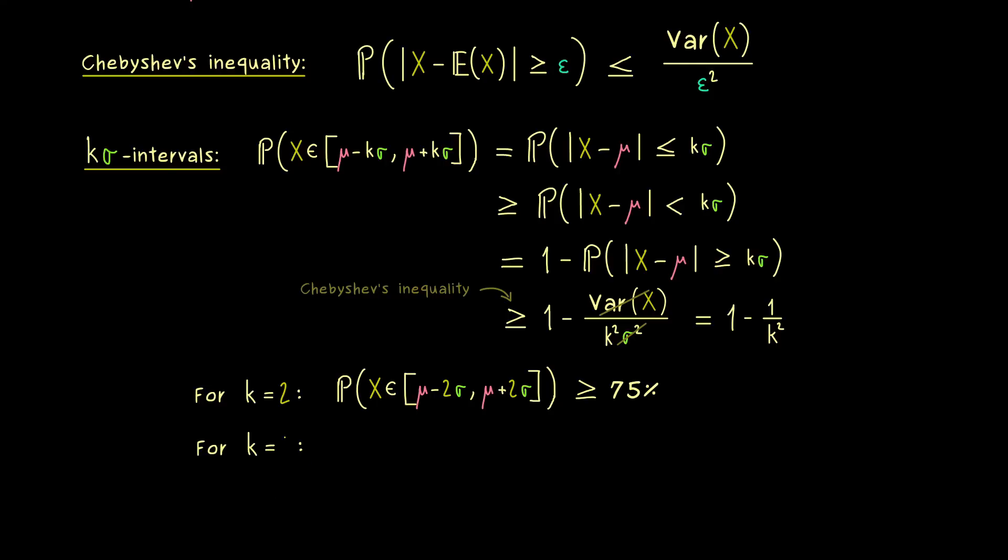And for this reason, we should also look at the important 3 sigma interval. Obviously, there we get an even higher probability. It's a simple calculation. We simply have 8 over 9. And this means that more than 88% of the samples lie in the 3 sigma interval. And this is measured with respect to our general probability measure P here. So the point here is that the 3 sigma interval already covers a lot.